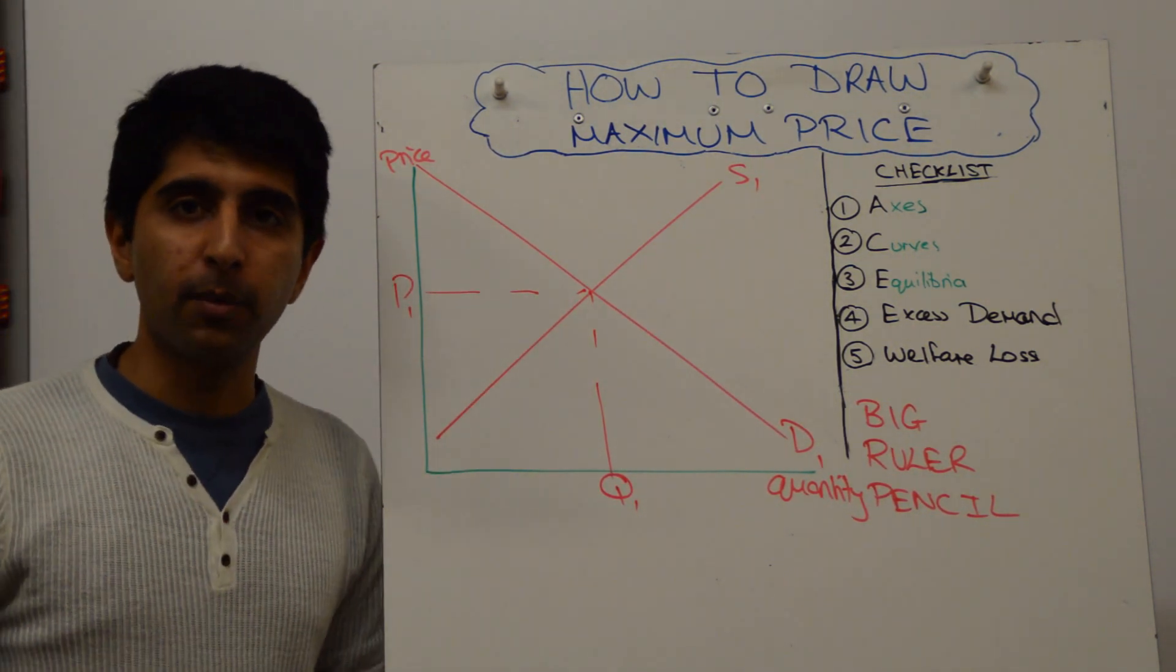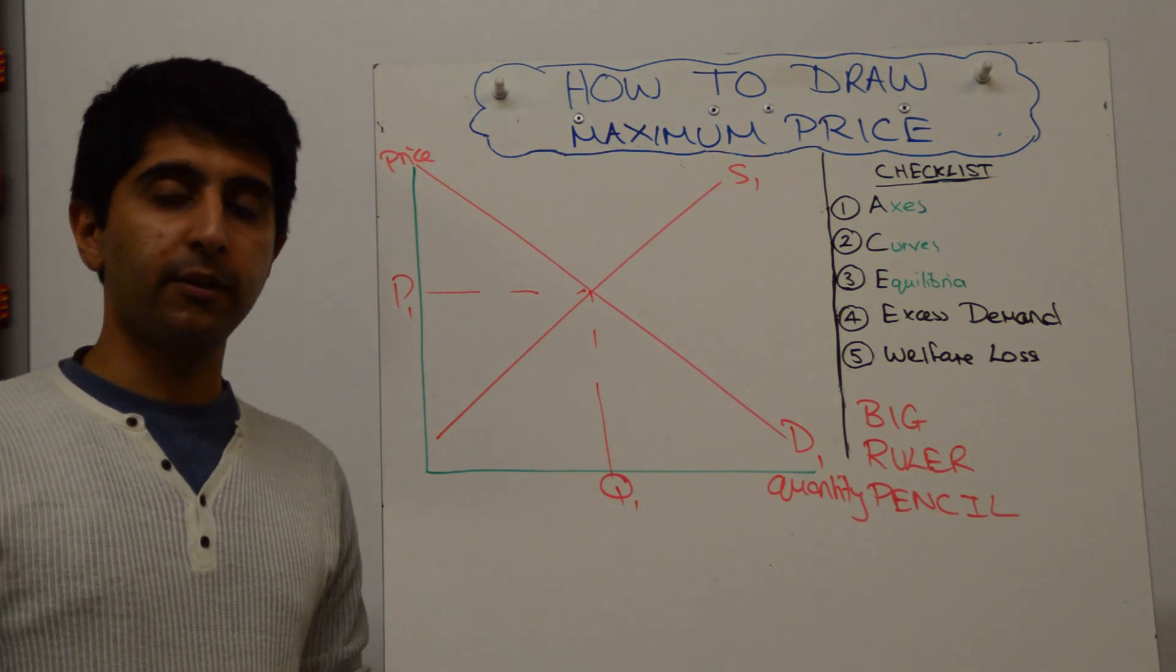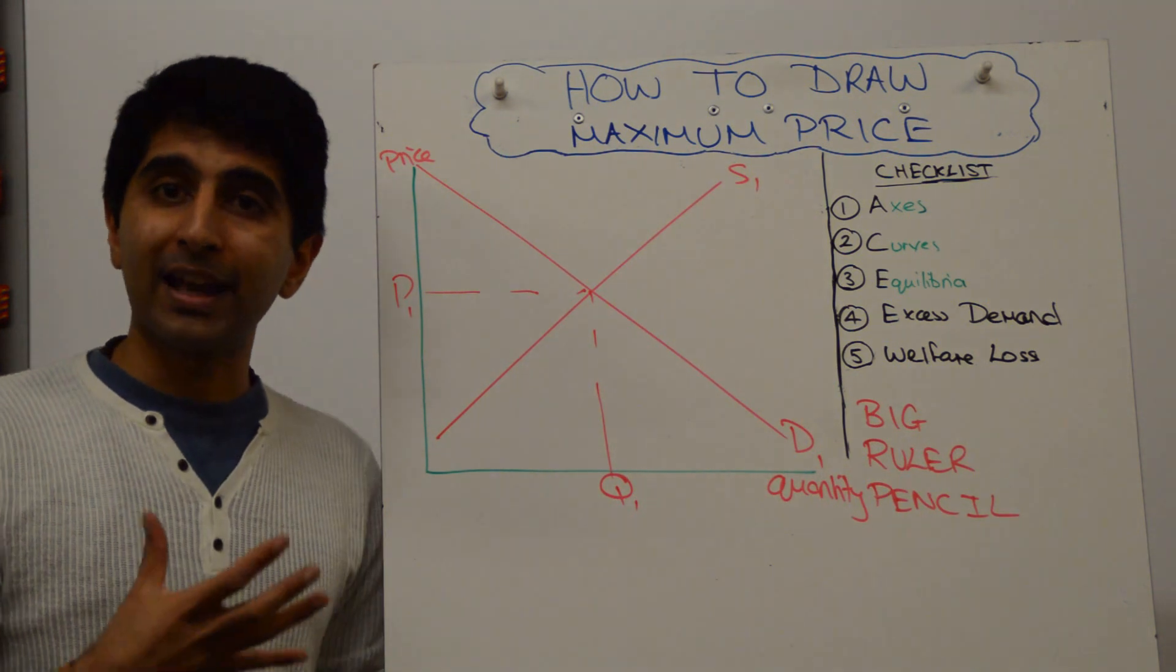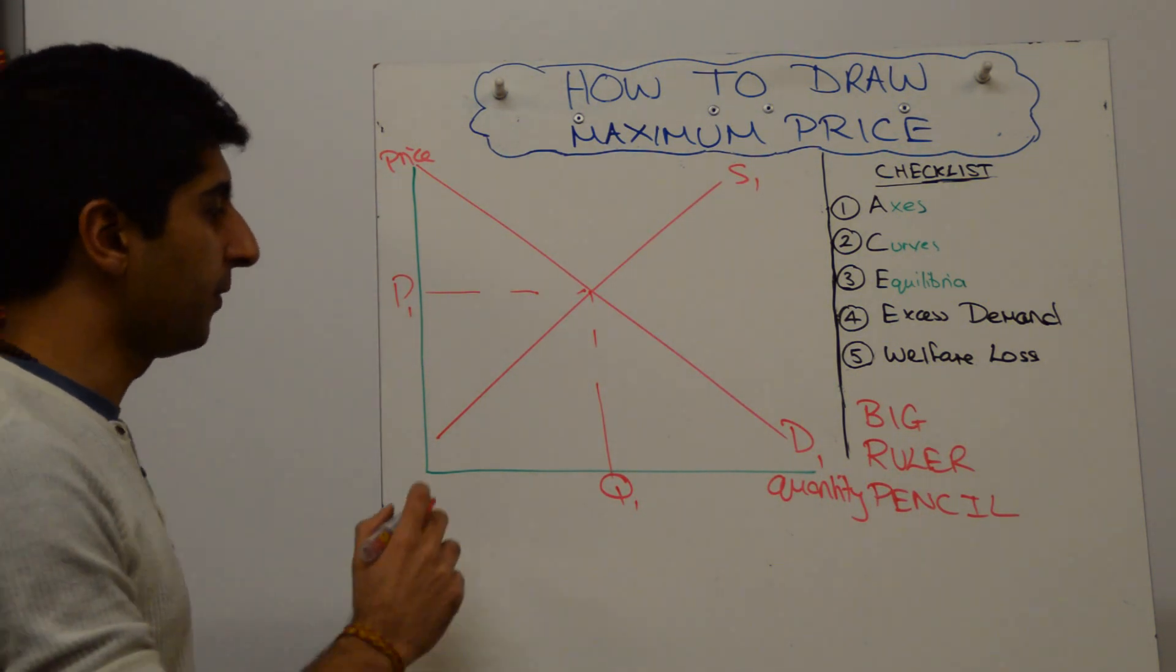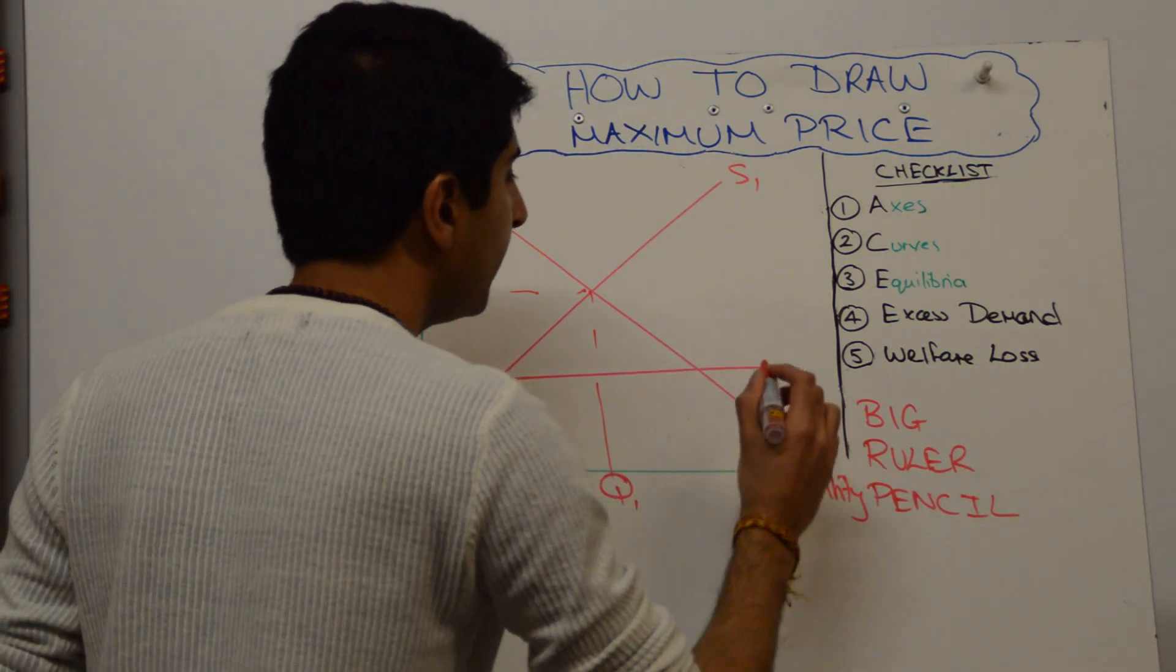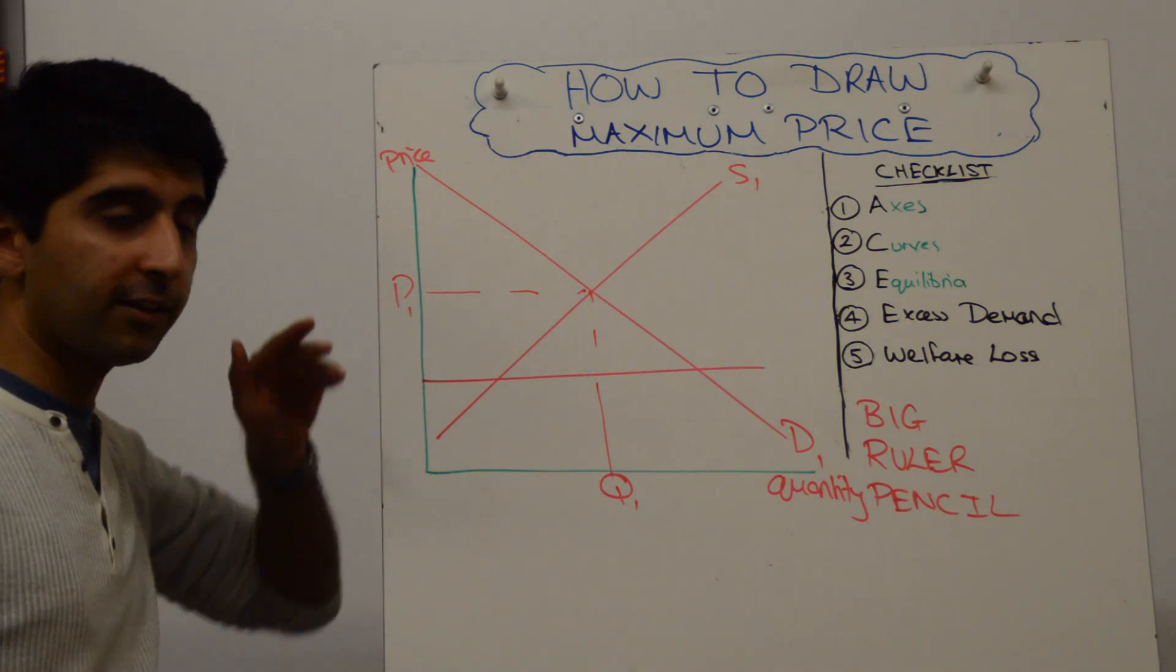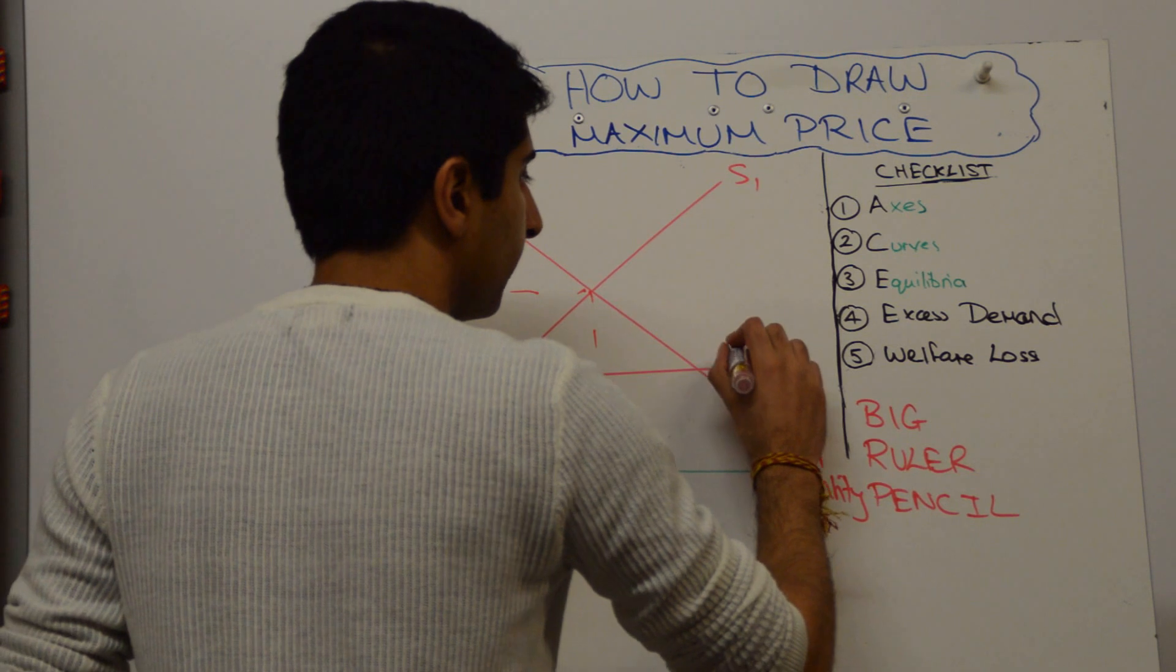Next is put on your maximum price. Normally maximum prices are going to be set below the equilibrium price, so that consumers can actually afford these goods or services. So you can put that on here as a flat line. This is also known as a price ceiling, because the price is not allowed to go above it.